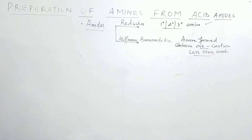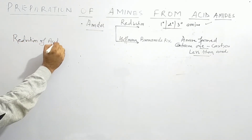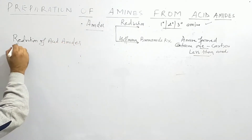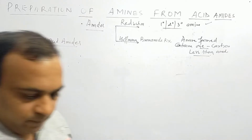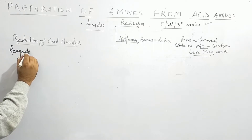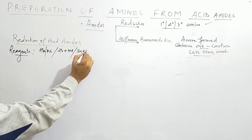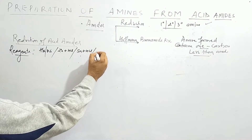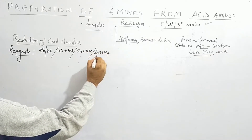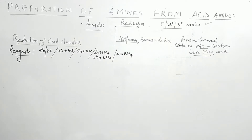First we will study the reduction of acid amide. We can use the reagents: hydrogen in presence of nickel, zinc plus HCl, tin plus HCl, LiAlH4 in presence of dry ether, and NaBH4. All these reagents we can use.